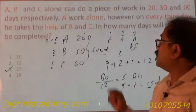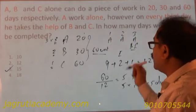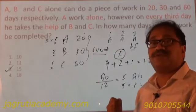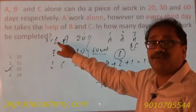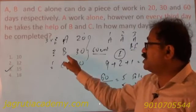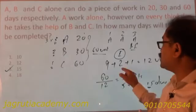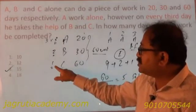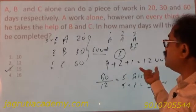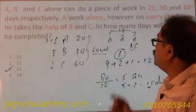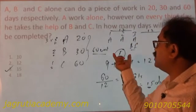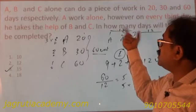The same pattern repeats, so this 3-day cycle is considered 1 set. In 1 set, A works for 3 days at 3 units per day, completing 9 units. B works only on the third day at 2 units, so B contributes 2 units. C also works only on the third day at 1 unit per day, contributing 1 unit. So in these 3 days, 9 plus 2 plus 1 equals 12 units are completed.